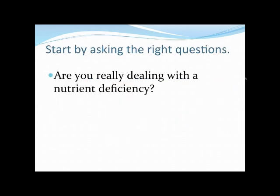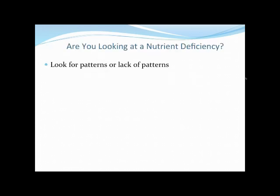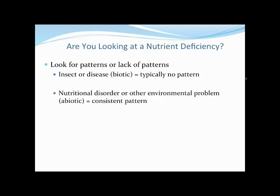The first thing we want to do is ask the right questions. The first question I always ask is: are you really dealing with a nutrient deficiency? The way to determine that is to look for patterns or the lack of patterns within the greenhouse or the flat of plants. Usually if it's an insect or a disease — a biotic problem — there's typically no pattern. But if it's a nutritional disorder or another environmental problem — an abiotic problem — there is a consistent pattern.